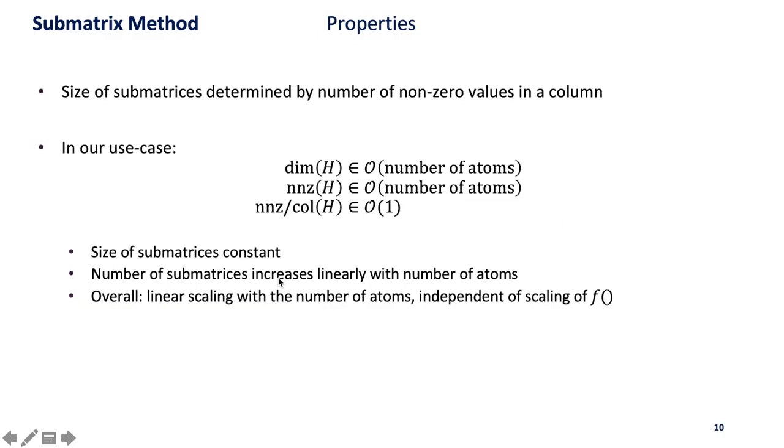The size of the submatrices is determined by the number of non-zero values in a column. This is interesting because the number of non-zero elements in the Hamilton matrix only grows linearly with the number of atoms. This means the number of non-zero elements per column roughly stays constant and the size of the submatrices stays constant.